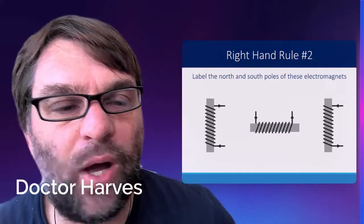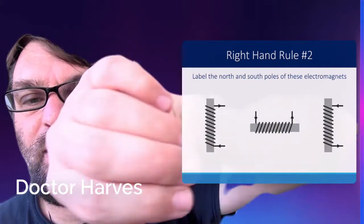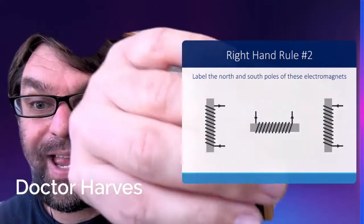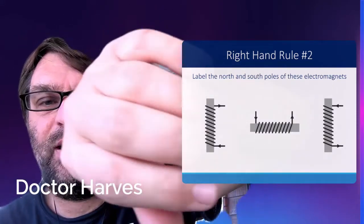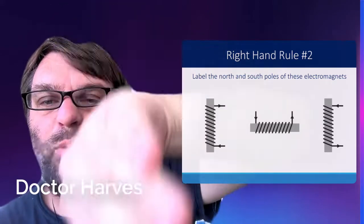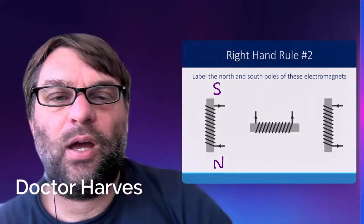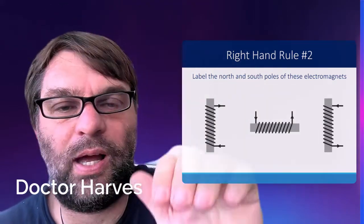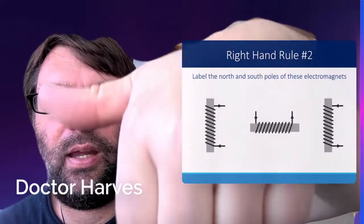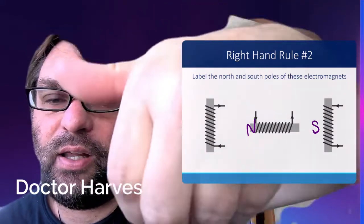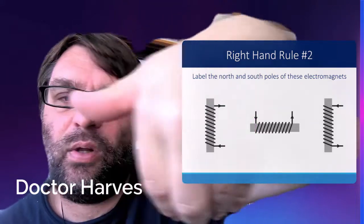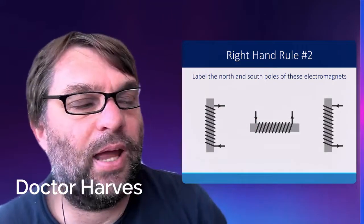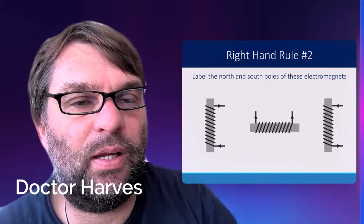For the first one here, basically, using your right-hand again, the current is going around like that. So, that means the north pole must be going down. In the other example, you've got the current going around in that direction. So, that means the north pole is that direction.